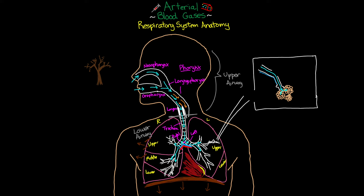Blood vessels follow along with all the bronchiole branching and segmentation, eventually lining the outside of individual alveoli with capillary beds — and these capillary beds are what permit gas exchange to take place. Deoxygenated blood from the right ventricle travels through the pulmonary arteries, branches down to the alveoli, passes through those capillaries, and returns through the pulmonary veins back to the left heart, now oxygenated, to be pumped throughout the rest of the body.